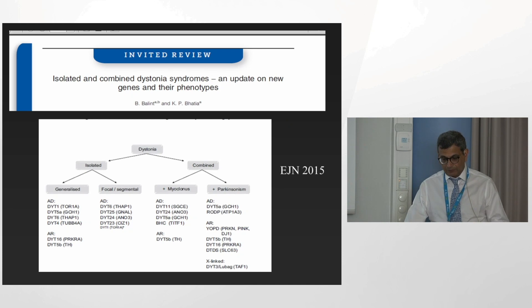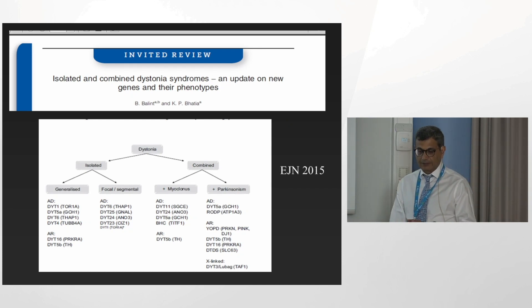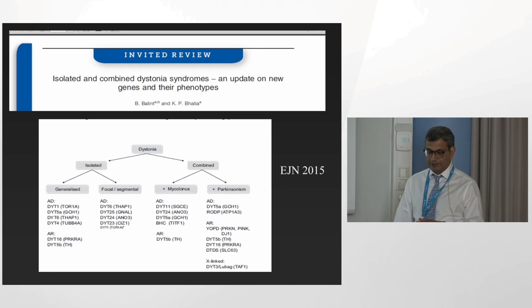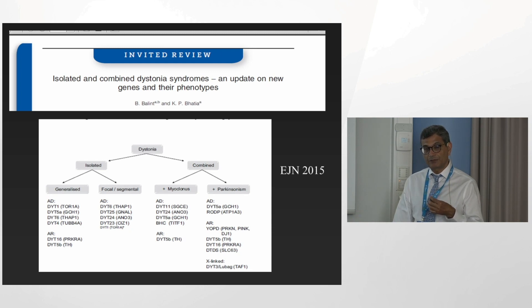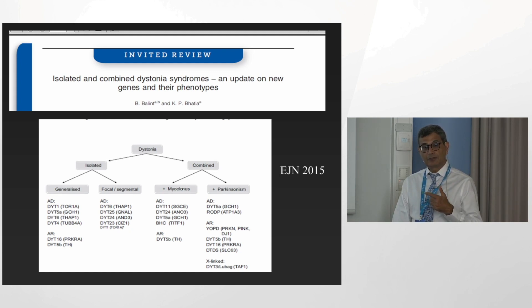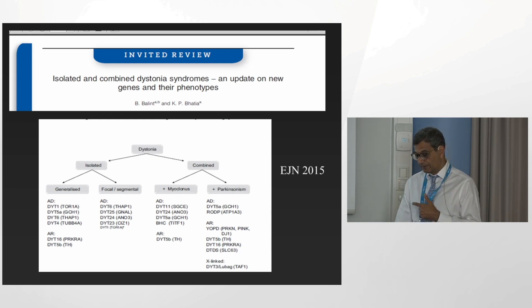So I've given you a little background of how we would go about deciding when we are clinically evaluating a patient. First: is this dystonia? Second: look for the peculiarities of dystonia — the overflow, the sensory trick. Third: look at whether the distribution and the age of onset and whether the dystonia is isolated or combined.